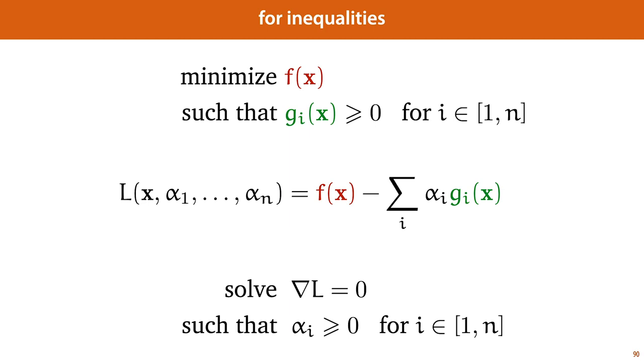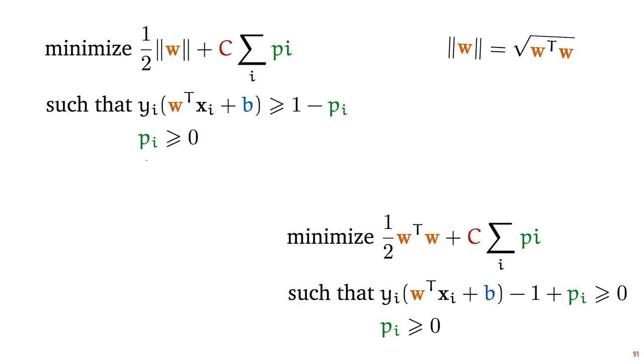To apply this method to our optimization objective, we will rewrite it a little bit. We will do two things. First, instead of minimizing the absolute magnitude of w, we note that this magnitude is the square root of the dot product of w with itself, and that if we minimize the square of this magnitude, it will not change the location of the optimum.